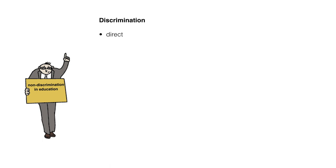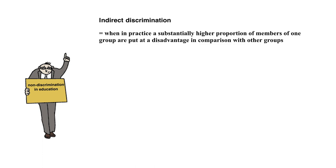Discrimination may be direct, indirect, or by association with another person. Indirect discrimination occurs when in practice a substantially higher proportion of members of one group are put at a disadvantage in comparison with other groups. Indirect discrimination targets the effect of a rule or practice.